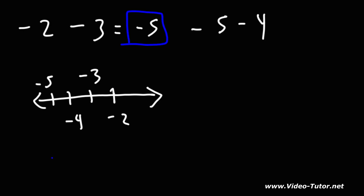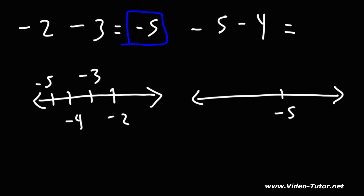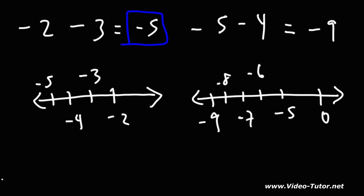Now let's do the same for the other one — what's negative 5 minus 4? Starting at negative 5, we travel four units to the left — negative 6, negative 7, negative 8, negative 9. So negative 5 minus 4 is negative 9.